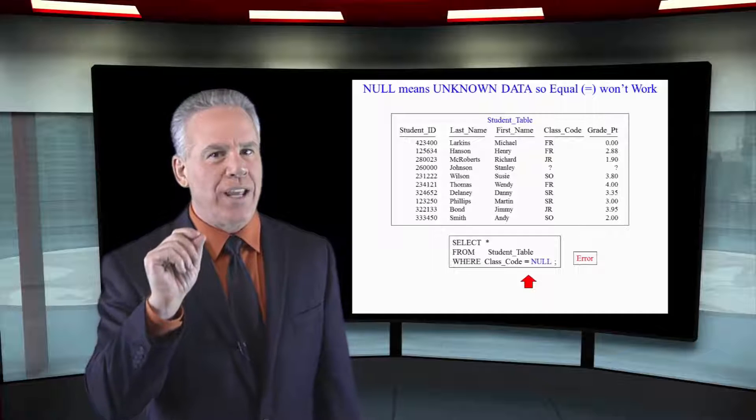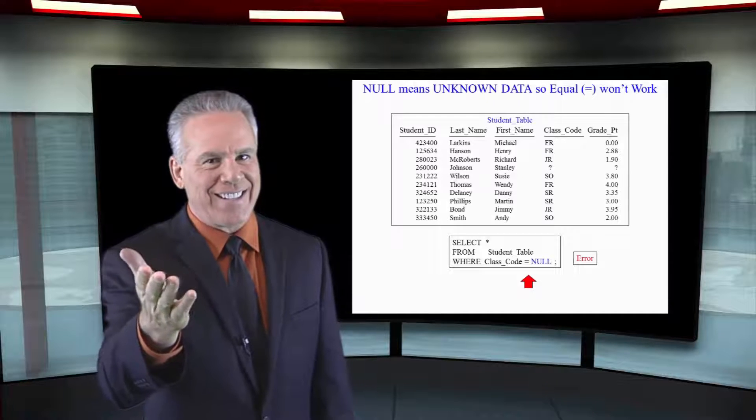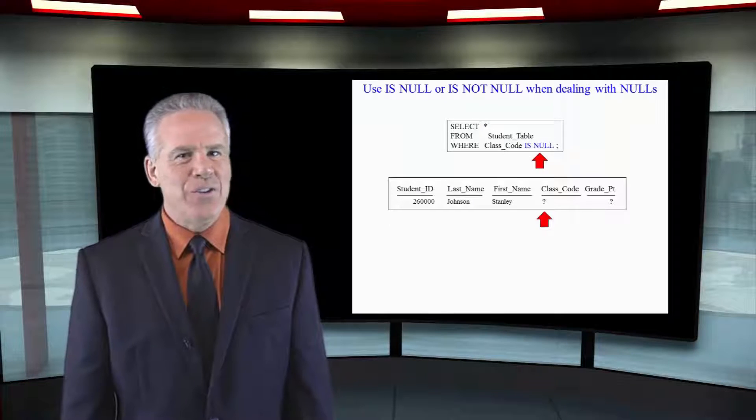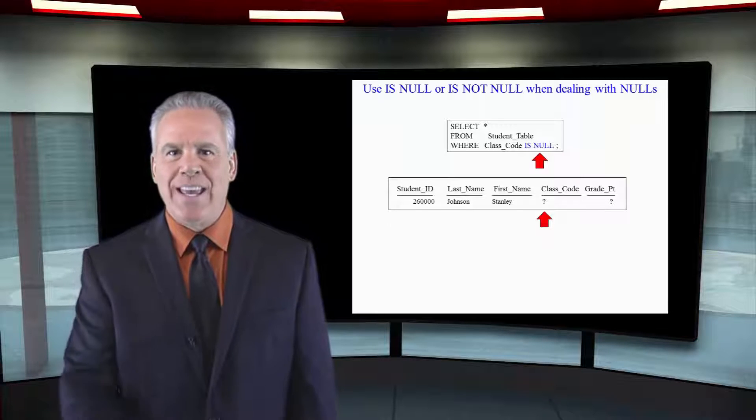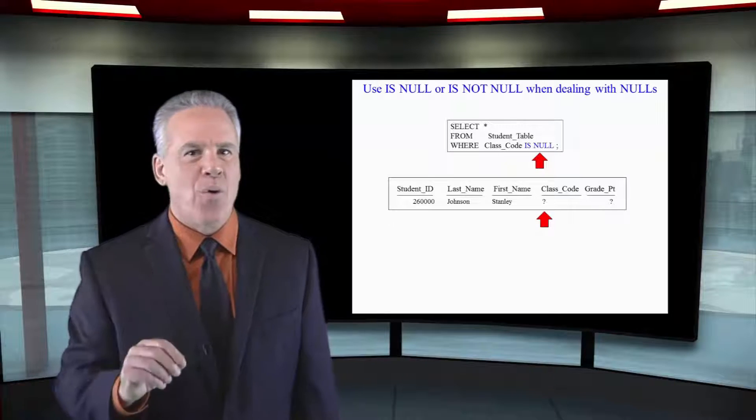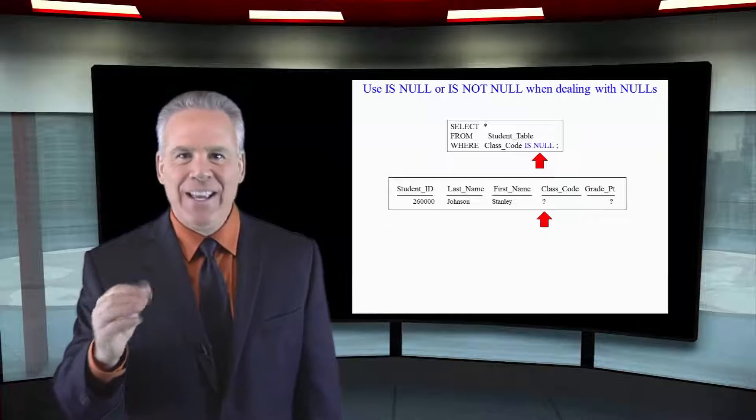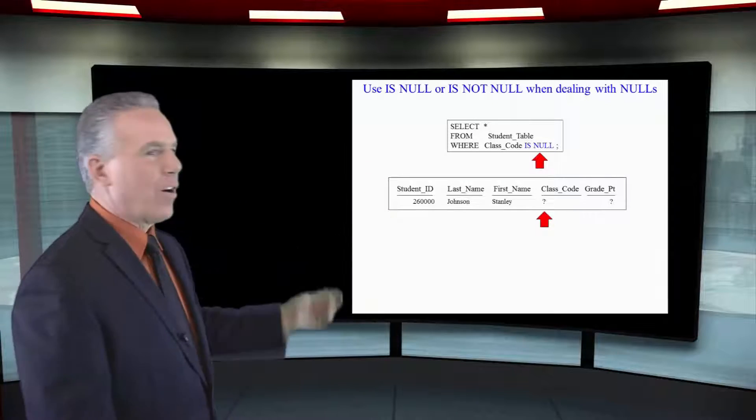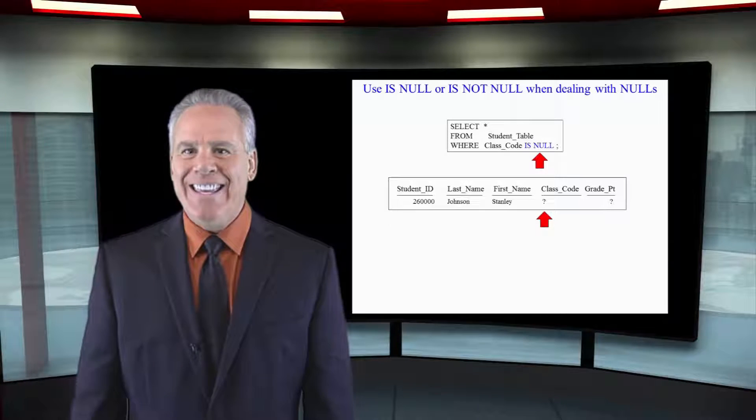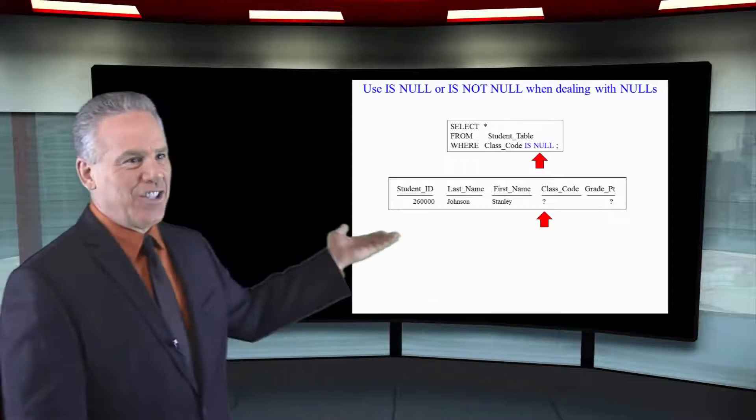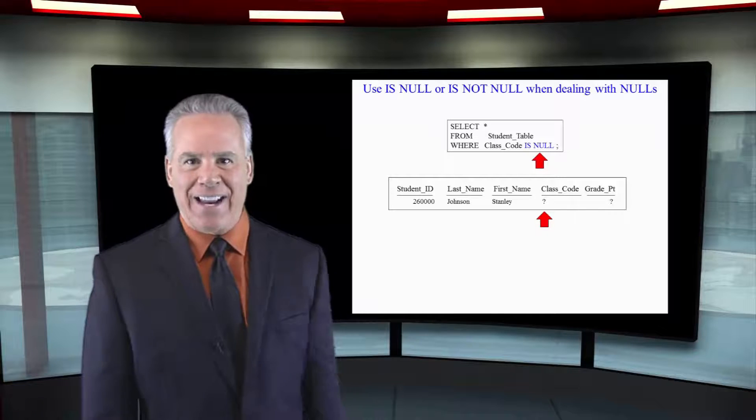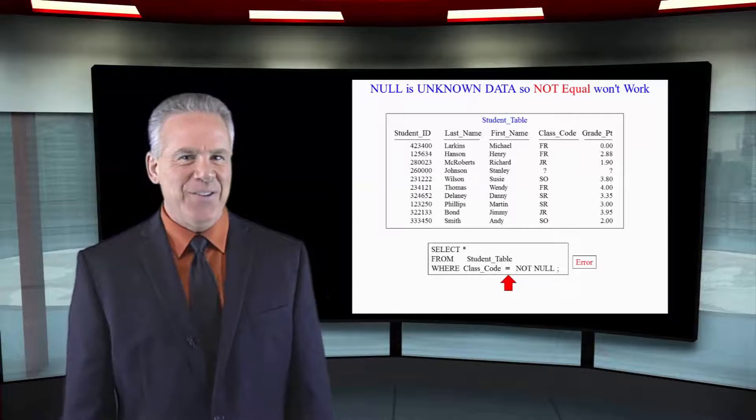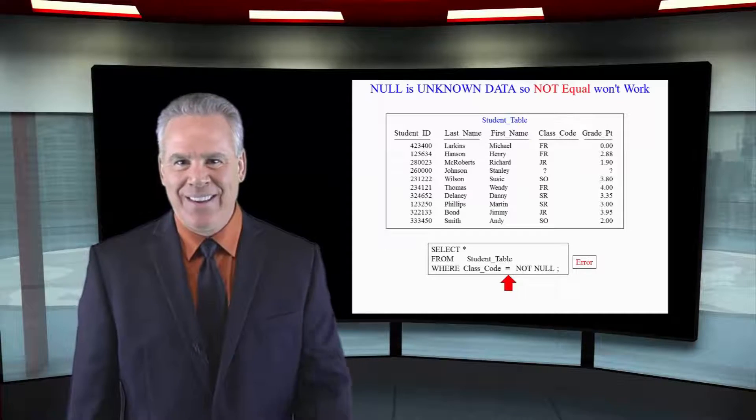You're going to have to use the word IS. There's only two ways to deal with nulls: IS NULL or IS NOT NULL. In this case we want to select all columns from the student table where class code IS NULL, and Stanley Johnson comes flying back.